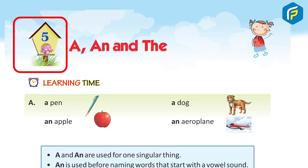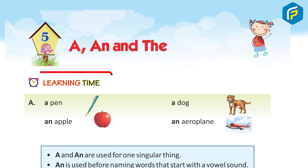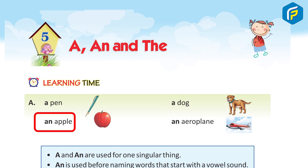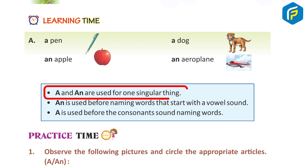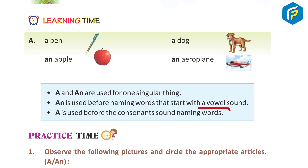Chapter 5: A, An, and The. Learning Time A. A pen, a dog, an apple, an aeroplane. 'A' and 'An' are used for one singular thing. 'An' is used before naming words that begin with a vowel sound.